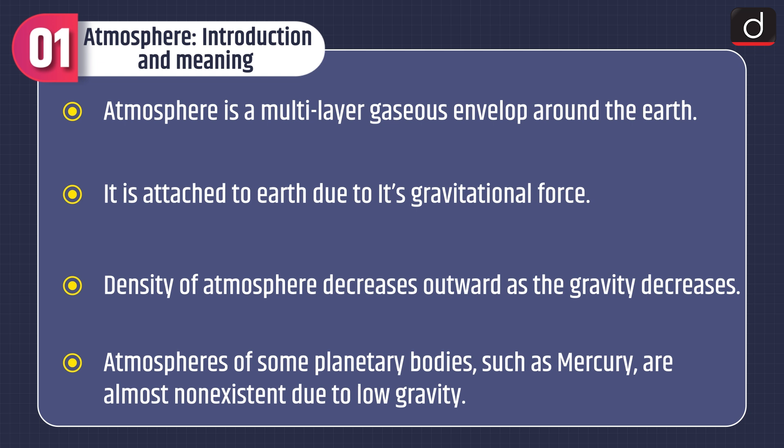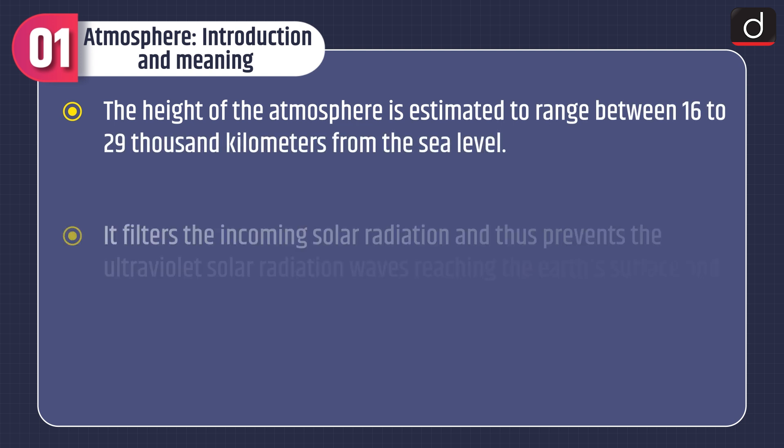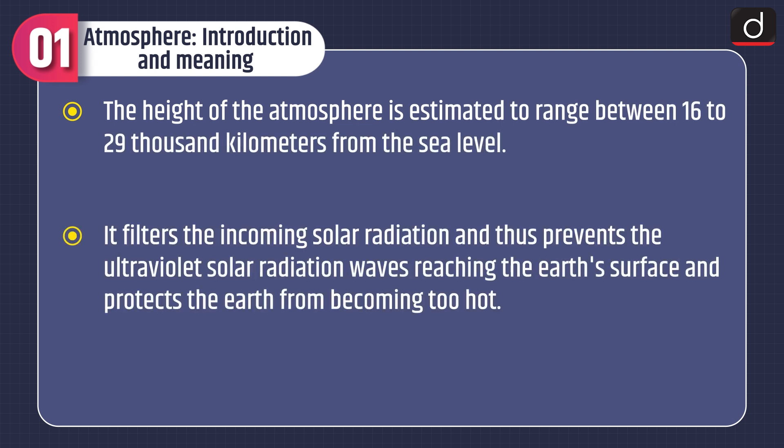Atmosphere is a multi-layer gaseous envelope around the earth. It is attached to earth due to its gravitational force. Density of atmosphere decreases outward as the gravity decreases. Atmospheres of some planetary bodies such as Mercury are almost non-existent due to low gravity. The height of the atmosphere is estimated to range between 16 to 29,000 kilometers from the sea level. It filters the incoming solar radiation, preventing ultraviolet solar radiation waves from reaching the earth's surface and protects the earth from becoming too hot.